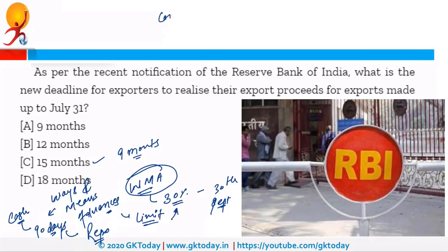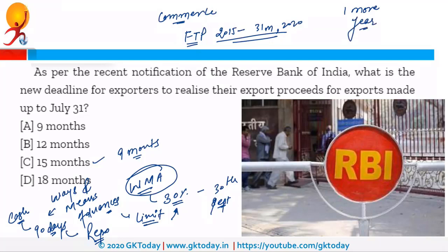Recently, the Ministry of Commerce announced changes in FTP — Foreign Trade Policy. These changes were announced because of COVID-19. The FTP was valid from 2015 to 31st March 2020, but due to coronavirus the government has decided to extend this policy by one more year, making it effective till 31st March 2021. In the context of foreign trade policy, there is a body named DGFT — Directorate General of Foreign Trade. Answer in the comments: under which ministry does it fall?